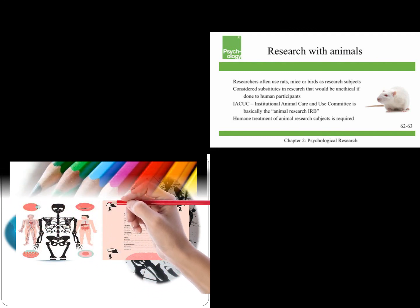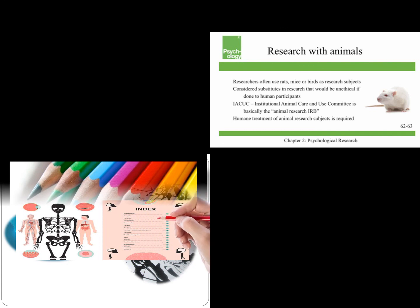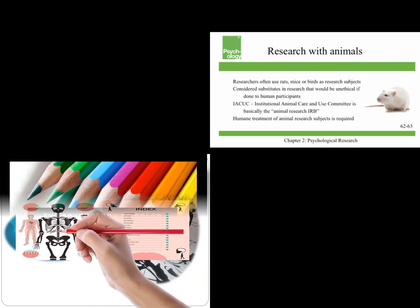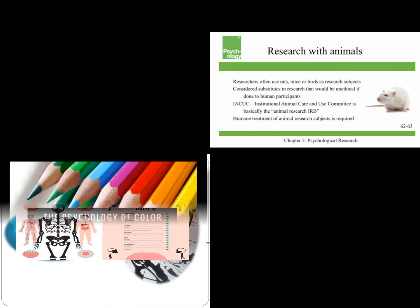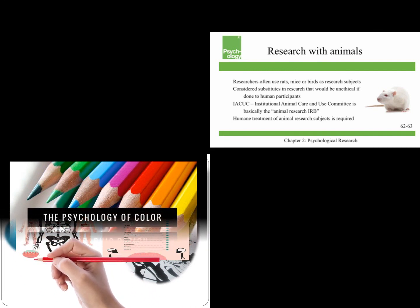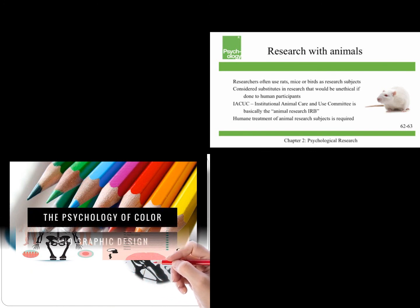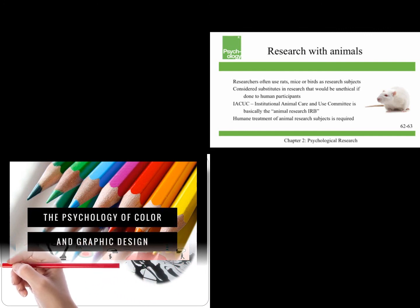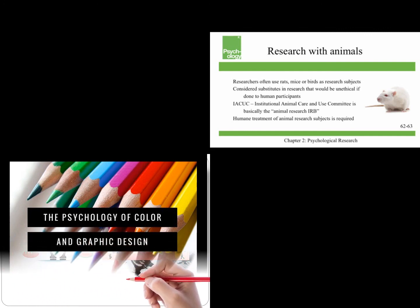Let's talk about research with animals. Researchers often use rats, mice, and birds as research subjects, and the APA estimates that 90% of animals that are used in research are in fact rats, mice, and birds. They're considered to be substitutes for research that would be unethical if it was done to human participants. And you would have an IACUC, which is an institutional animal care and use committee, and that's basically what an animal research IRB is, and they ensure the humane treatment of animal research subjects.